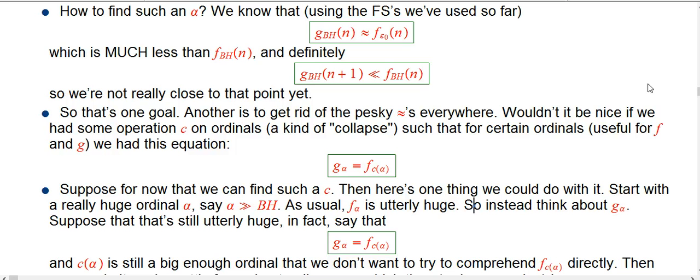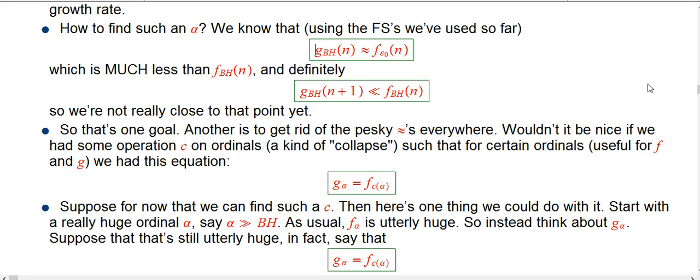Which is, gives us some idea of how much we've grown from some previous stage by looking at the number of terms in the initial expansion of f_α. So that's g_α. But suppose we're getting to the point where that's still utterly huge. We're already with BH, we're getting to the point where the g_BH function was the same growth rate as f_ε₀, which is not too shabby, and I think very few people would pretend that they have a really intuitive grasp of that one.